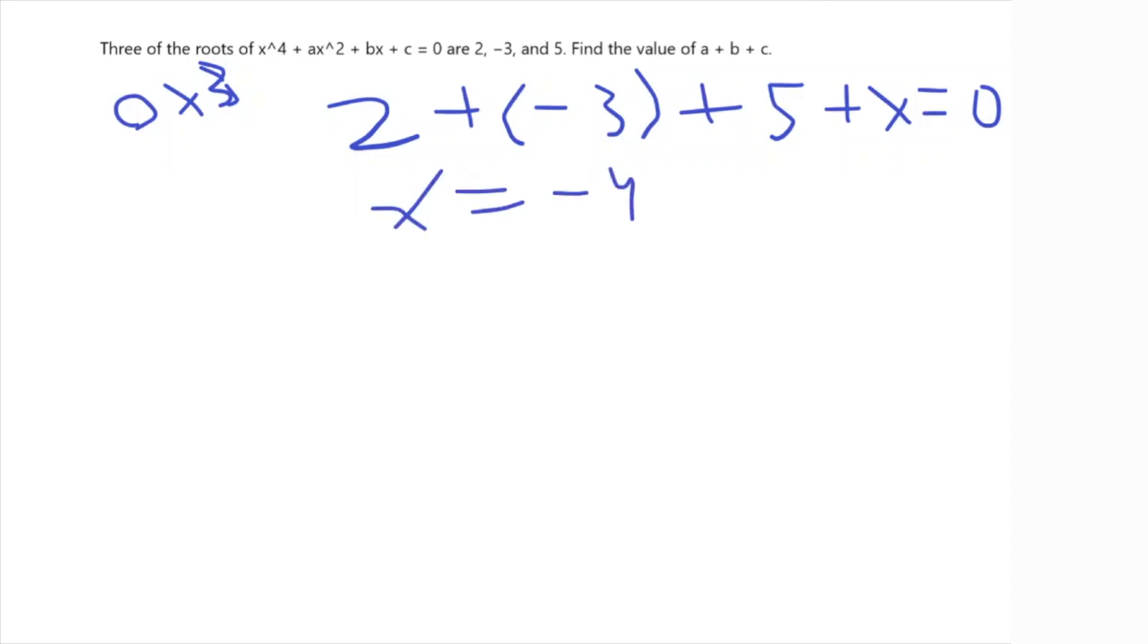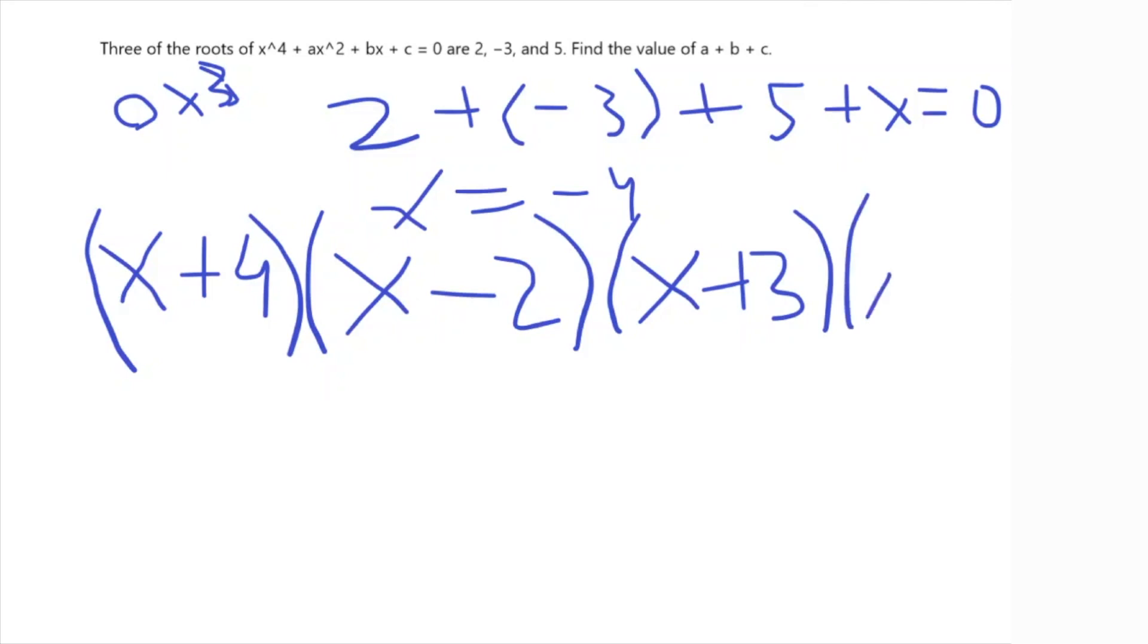So we might be attempting to bash this whole thing out for a, b, and c, and using properties such as the product of all the roots, the negative of it, is equal to c and then likewise. But there's a much better solution and a much faster solution. So let's consider the factored form of this polynomial. Because we know all the roots, we can easily find the factored form, which is (x plus 4) times (x minus 2) times (x plus 3) times (x minus 5).